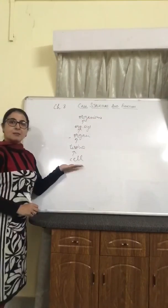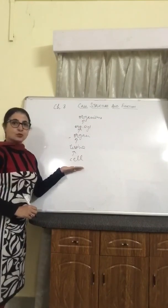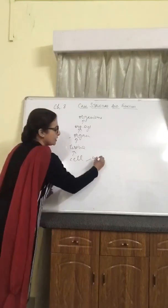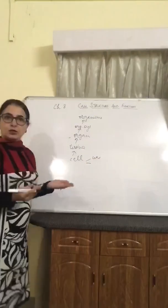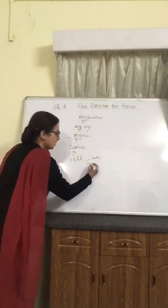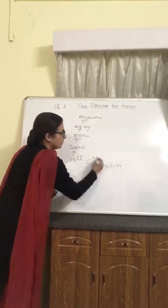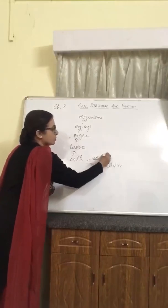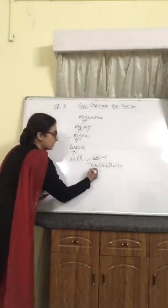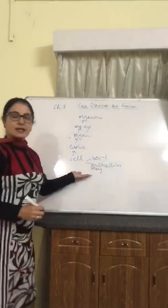Based upon the cells, if the organism has only one cell, it is known as a unicellular organism. If there are many cells, it is known as a multicellular organism. Remember: 'uni' means one — unicellular — and 'multi', M for many, means multicellular organism.